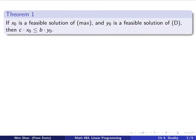Let's look at our first theorem, Theorem 1. It states as follows: if x0 is a feasible solution of the max problem and y0 is a feasible solution of D, the dual, then I would have c dot x0 less than or equal to b dot y0.